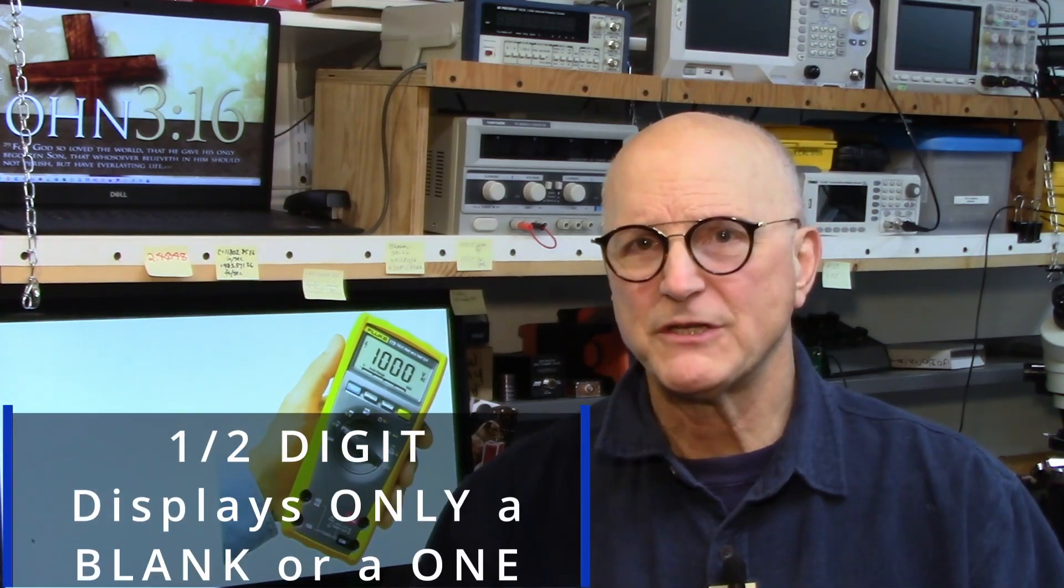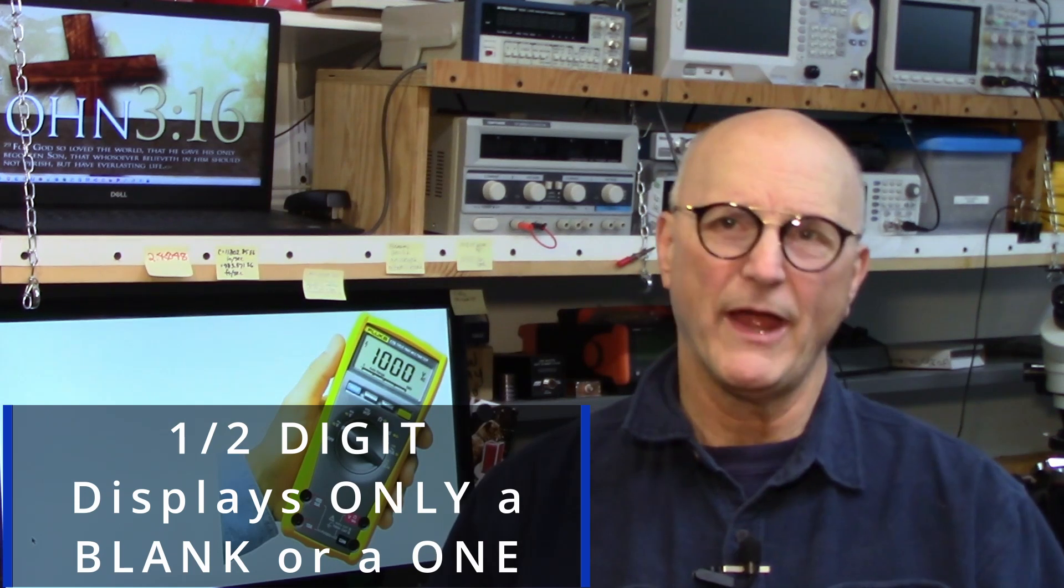According to one manufacturer, the half digit means that this digit will only display a blank or a one. According to my Fluke 175 user's manual, it has a three and three quarter digit display. This means that the most significant digit of the display will display a blank or numbers from one to six only.